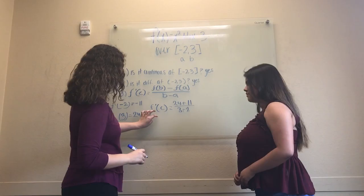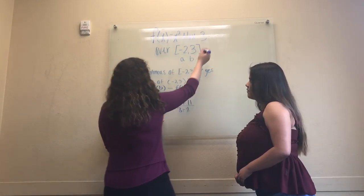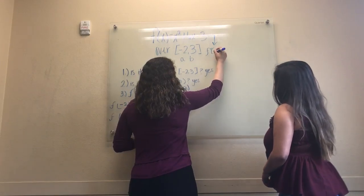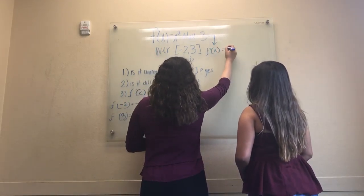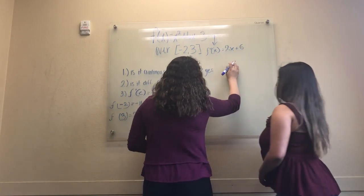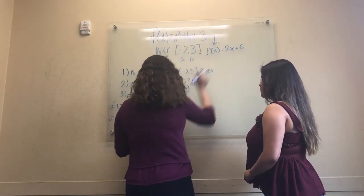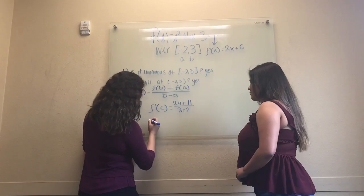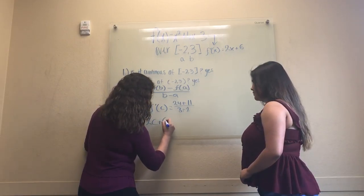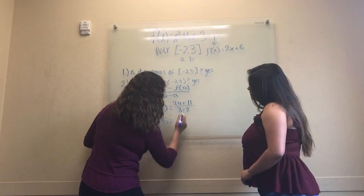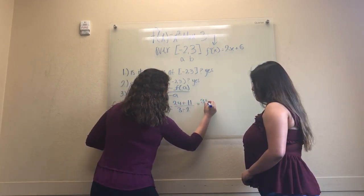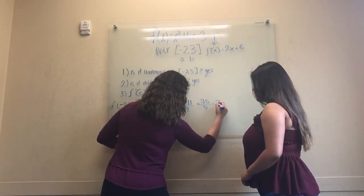Because we have f prime of c, we'll find the derivative of f of x. So this is equals to 2x plus 6. Here we're working with x, but we have to work with c. So over here we'll plug 2c plus 6 equals 24 plus 11, which is 35 divided by 5 equals 7.